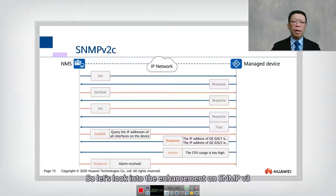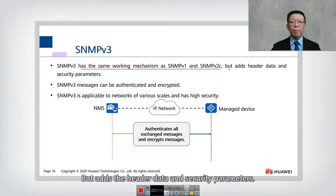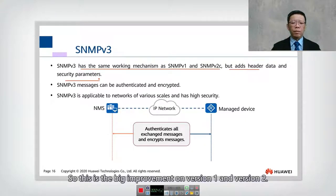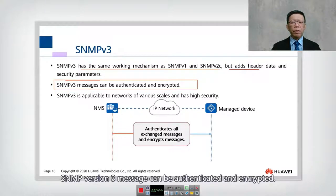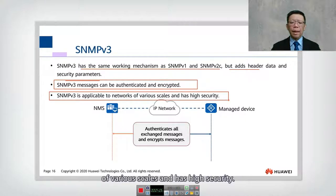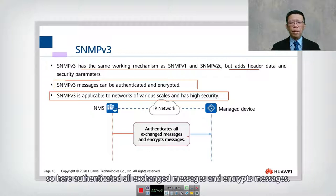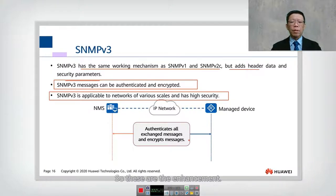Let's look into the enhancements on SNMP version 3. SNMP version 3 has the same working mechanism as version 1 and version 2C, but adds header data and security parameters. This is a big improvement. SNMP version 3 messages can be authenticated and encrypted. SNMP version 3 is applicable to networks of various scales and has high security. So if you are going to implement SNMP, you will prefer to use version 3 instead of version 2C. All exchanged messages are authenticated and encrypted — these are the enhancements.